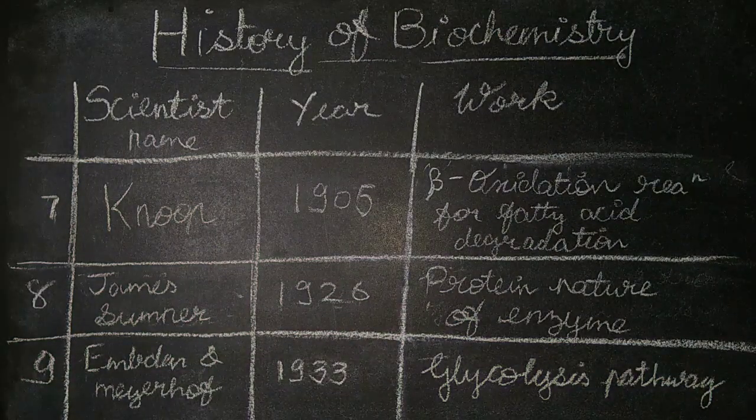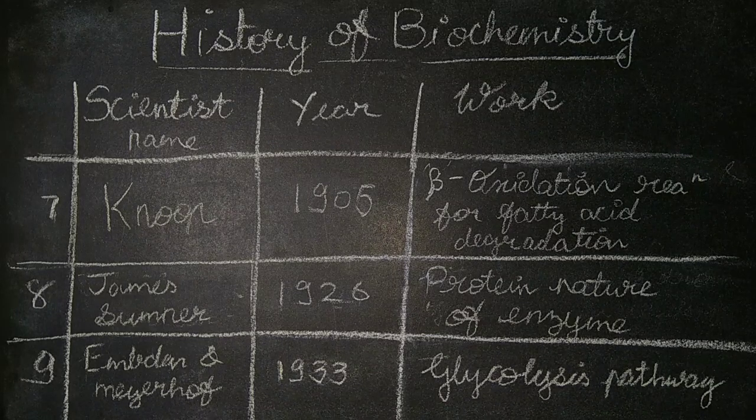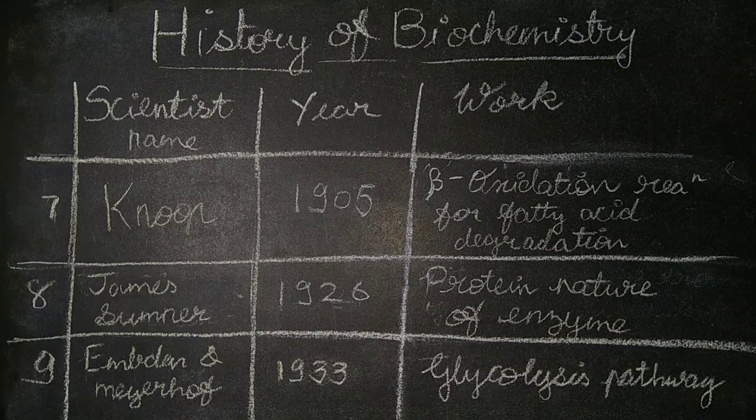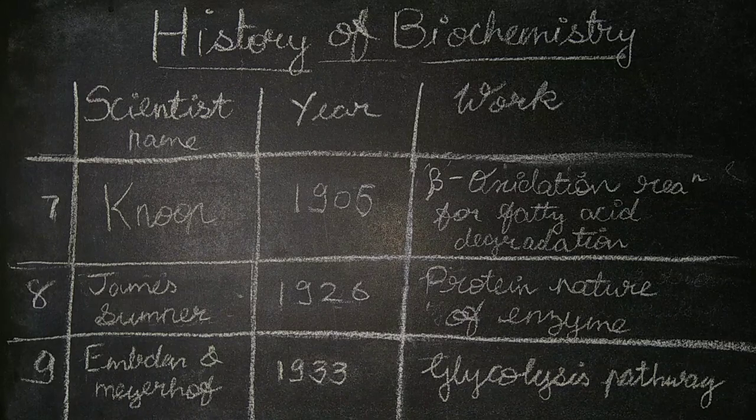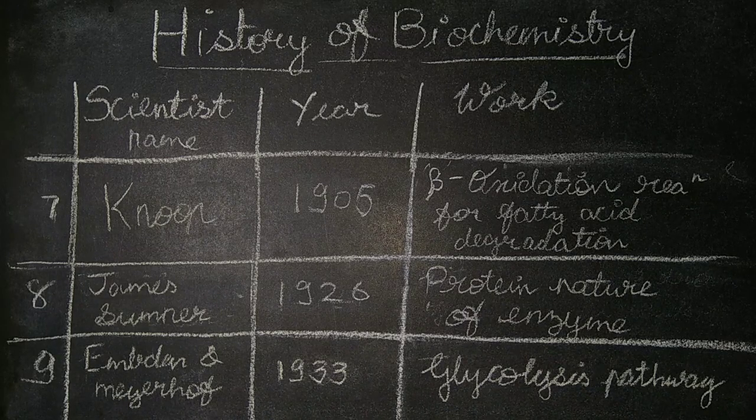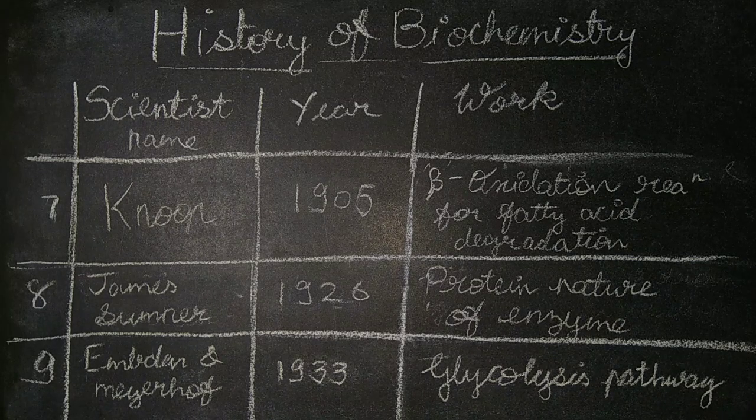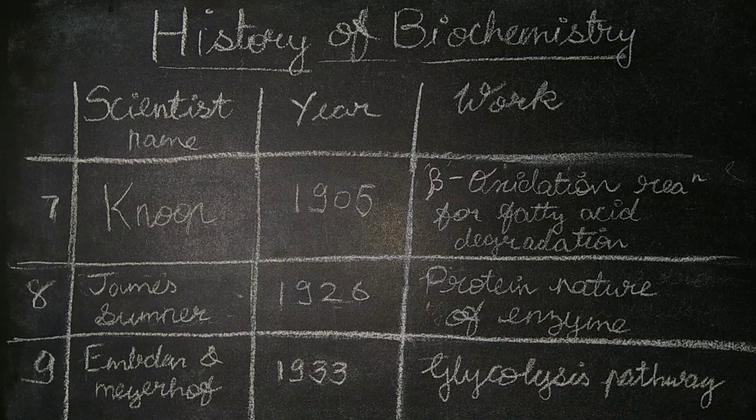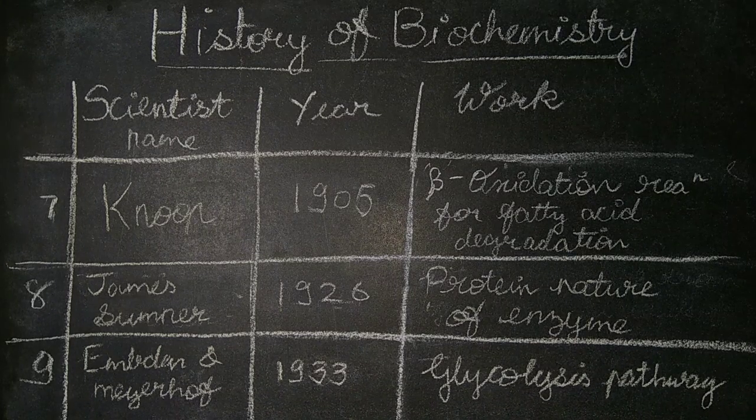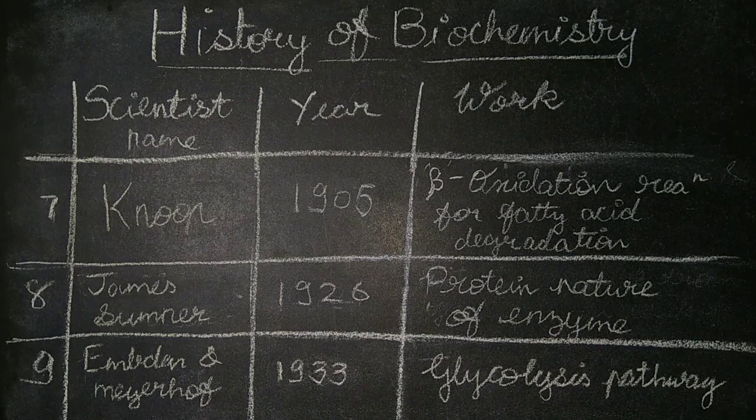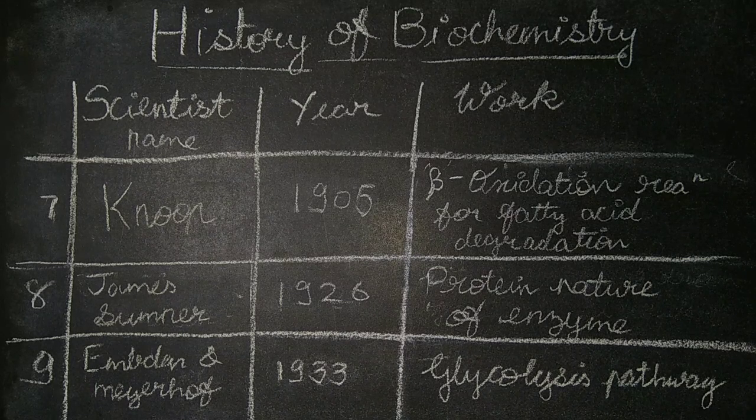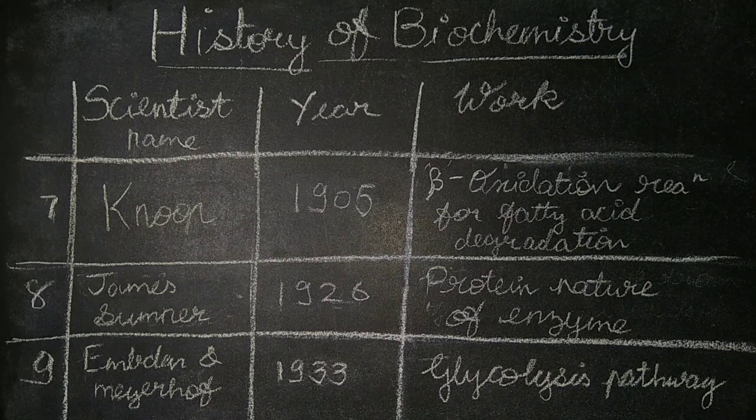The seventh is Knoop in the year 1905, who discovered the beta oxidation reaction for fatty acid degradation. Eighth is James Sumner in the year 1926, who showed the protein nature of enzymes. The ninth is Embden and Meyerhof in the year 1933, who worked on the glycolysis pathway.